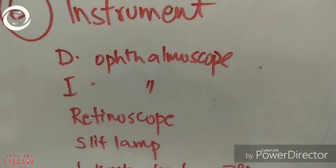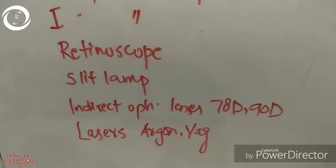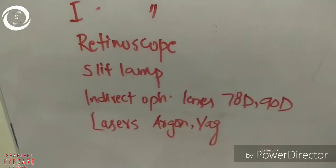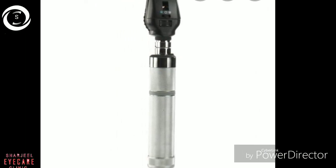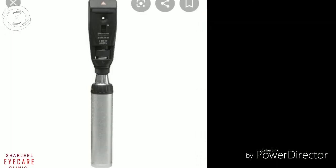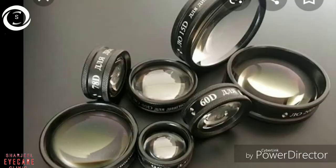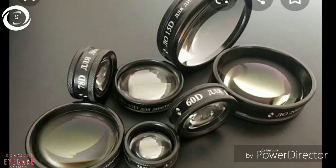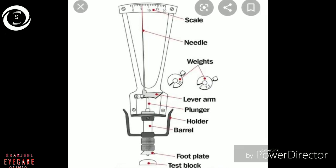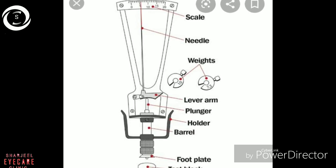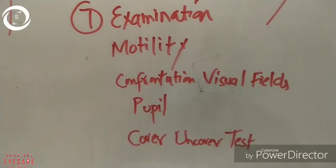The sixth station will be about instruments. You will either get a direct ophthalmoscope, indirect ophthalmoscope, retinoscope, slit lamp, argon or YAG laser. You have to name the parts and state advantages, disadvantages, and uses. Direct ophthalmoscope and indirect ophthalmoscope are shown here. Different lenses like 78, 60, and 90 diopter lenses are shown, and Schiotz tonometer with different parts is also shown.